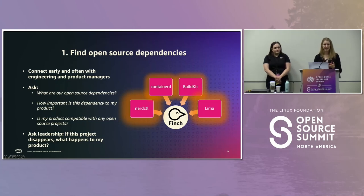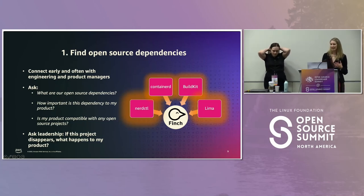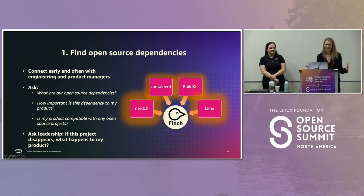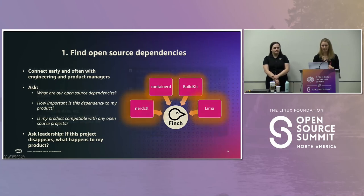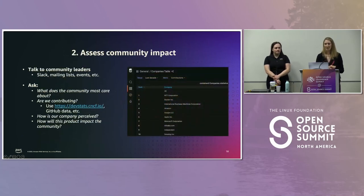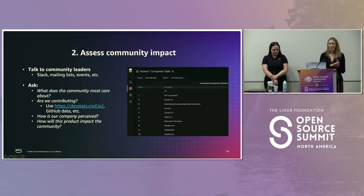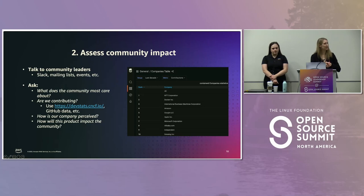Even if your product doesn't have any strong open source dependencies — meaning it's written completely from scratch in-house — you should still be asking if your product has open source compatibility. That's another way to build open source considerations into your marketing strategy. With your list of open source dependencies and compatibilities in hand, you then need to go research those communities and the technologies you're building on.